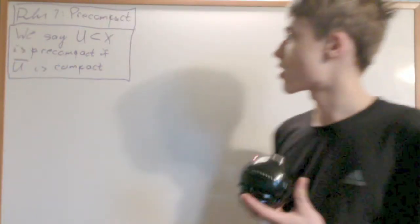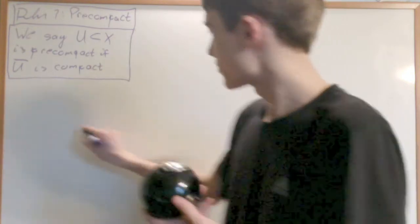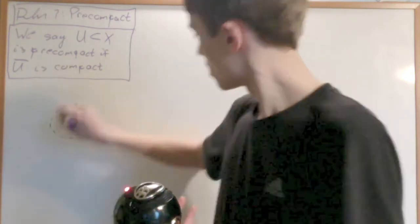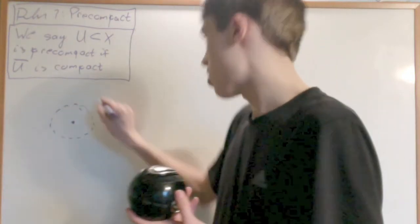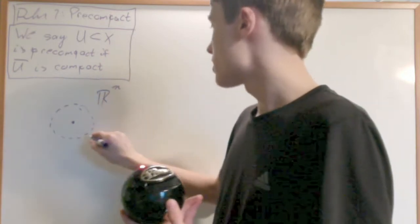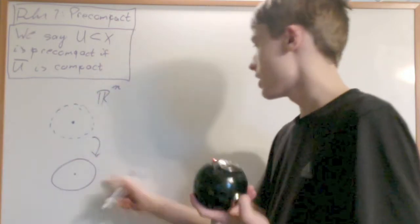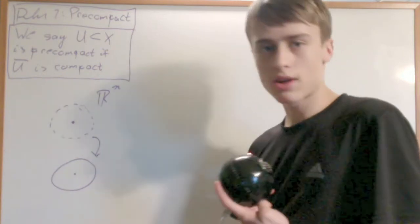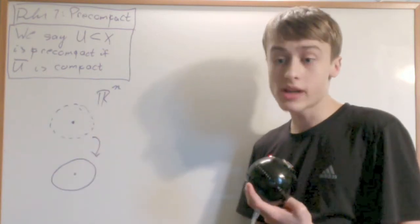It's not that hard to check that with coordinate balls, coordinate balls in R2 or Rn, that their closure is in fact compact so that coordinate balls are precompact.